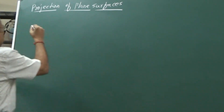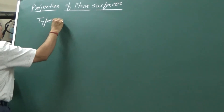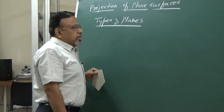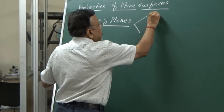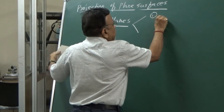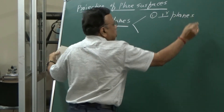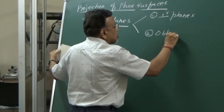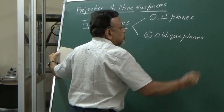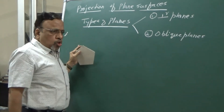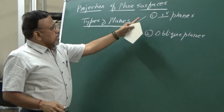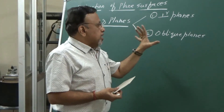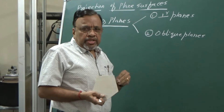Since we are interested to draw the projections of these plane figures, the plane surface has to be described with reference to HP and VP. Generally, we consider two types of planes: perpendicular planes and oblique planes. So broadly, orthographic projections can be drawn by considering either perpendicular planes or oblique planes.